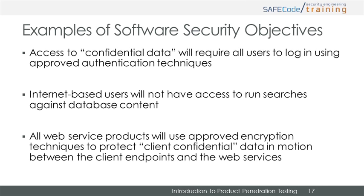All web service products will use approved encryption techniques to protect client confidential data in motion between client endpoints and the web services. A tester would not be concerned with unencrypted data, such as web search terms sent to a search engine, as long as that data was not classified as client confidential. A measure of success would be to identify ways of capturing client confidential data and either decrypting it or capturing it being transmitted in an unencrypted manner. Note that the tester may still be interested in capturing seemingly out-of-scope items as they may provide valuable information for other attacks.